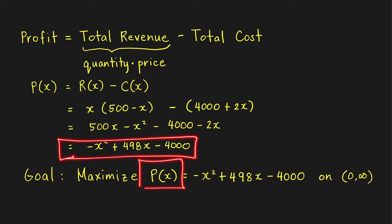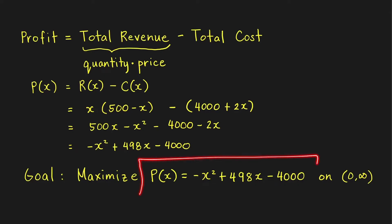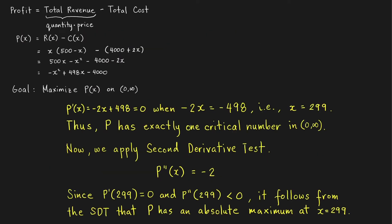The domain of this function is the open interval (0, infinity), assuming the company can produce as many stereos as possible. We exclude 0 because it doesn't make sense that when we produce nothing, the price per unit would simply be 500 minus 0, which is $500. Now, let's apply a maximum and minimum principle to find the maximum value of this profit function. The candidates that will give us the maximum profit are the critical numbers of this profit function.